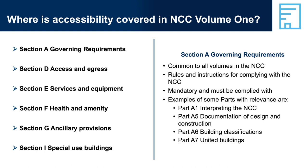Part A1, Interpreting the NCC, describes how to interpret provisions within the NCC, including application statements, limitation statements, and exception statements. Part A5, Documentation of Design and Construction, describes the requirements for evidence and documentation to prove compliance with relevant access performance requirements. Part A6, Building Classification, describes the building classes, which in part determine which accessibility provisions apply to a building or part of a building. Part A7 describes the treatment of united buildings, which can have implications for accessibility requirements.